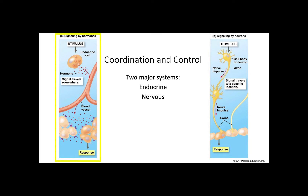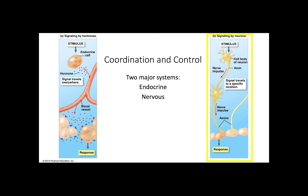Having looked at animal form and some types of function, we need to discuss coordination and control. The body relies on two major systems: the endocrine and the nervous systems. For signaling by hormones, a stimulus activates an endocrine cell, which secretes hormones — chemical compounds that act as signaling molecules. Hormones travel through the blood and reach receptors on specialized cells that trigger a response. For signaling by neurons, a stimulus is received by a neuron, which initiates an action potential or nerve impulse that travels along the axon and axon terminals to reach another neuron or a different type of cell. The receiving cell is the one that triggers the response.